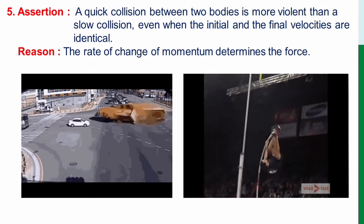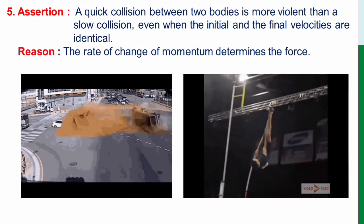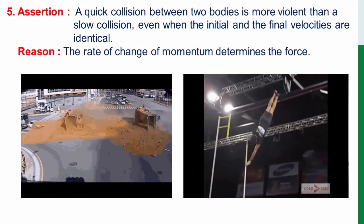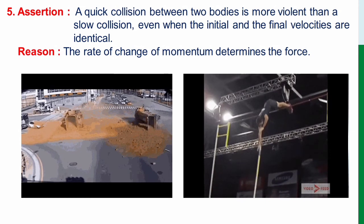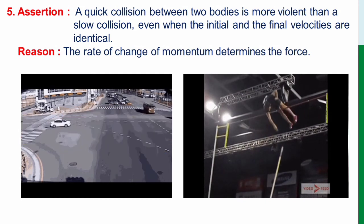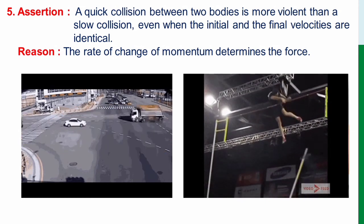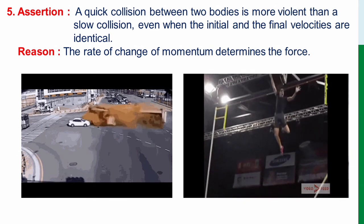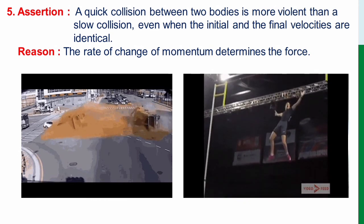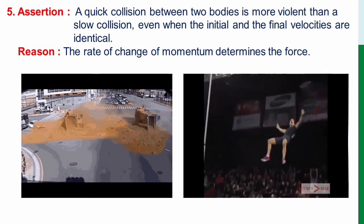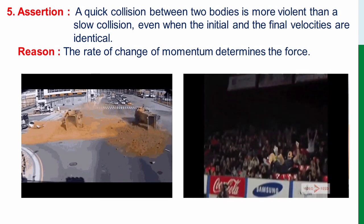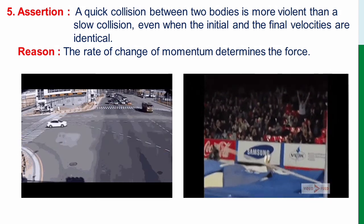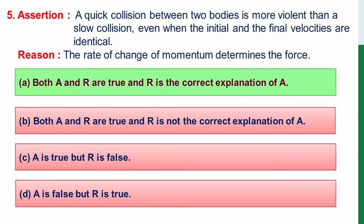Also, in the examples of second law of motion, we have understood that a fielder moves his hand back or cushion beds are provided for athletes so that the time of the change in momentum can be increased and its impact can be reduced. So rate of change of momentum do determine the force or the impact it creates on the colliding object. Hence, here the correct option is option A. Both A and R are true and R is the correct explanation of A.